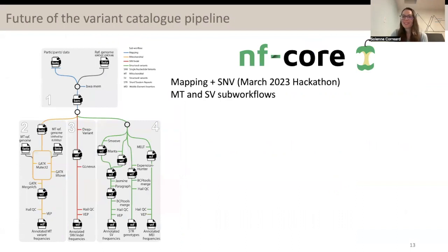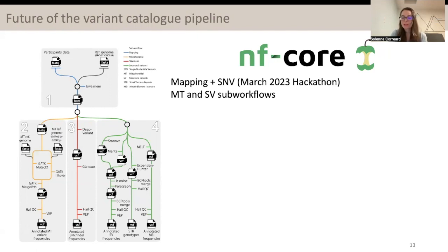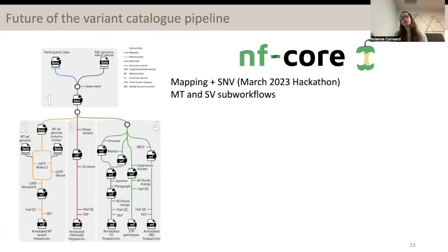Therefore, the future for the pipeline is to move it to an NF-core-level pipeline. My goal is to move the mapping as well as the single nucleotide variant subworkflow during a next-month hackathon. So, if anyone wants to team up with me for coding or for coding review, please reach out. After that, we will have to move the mitochondrial and the structural variant subworkflows also to NF-core. This will allow other people to try it more easily, but it will also force us to do better documentation, and that is very important to make sure other groups can use the pipeline.